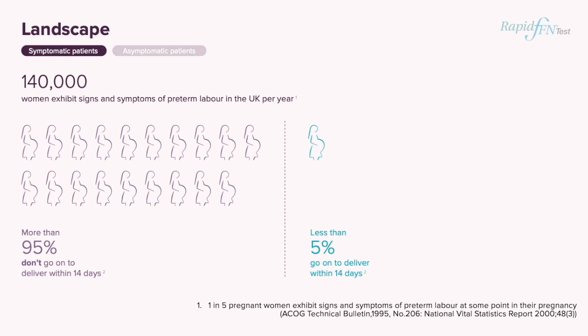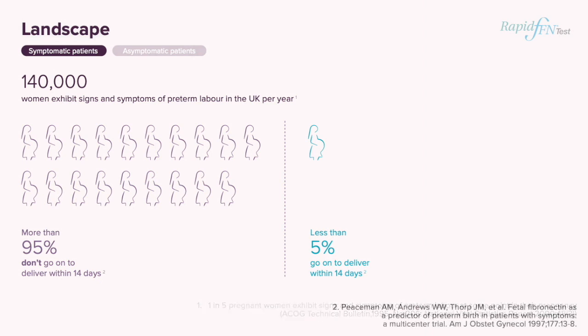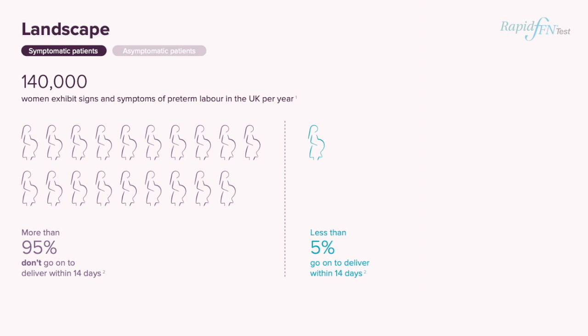That equates to around 140,000 women per year. Of this number, studies show that more than 95% of these women don't go on to deliver within the next 14 days, leaving less than 5% that do.